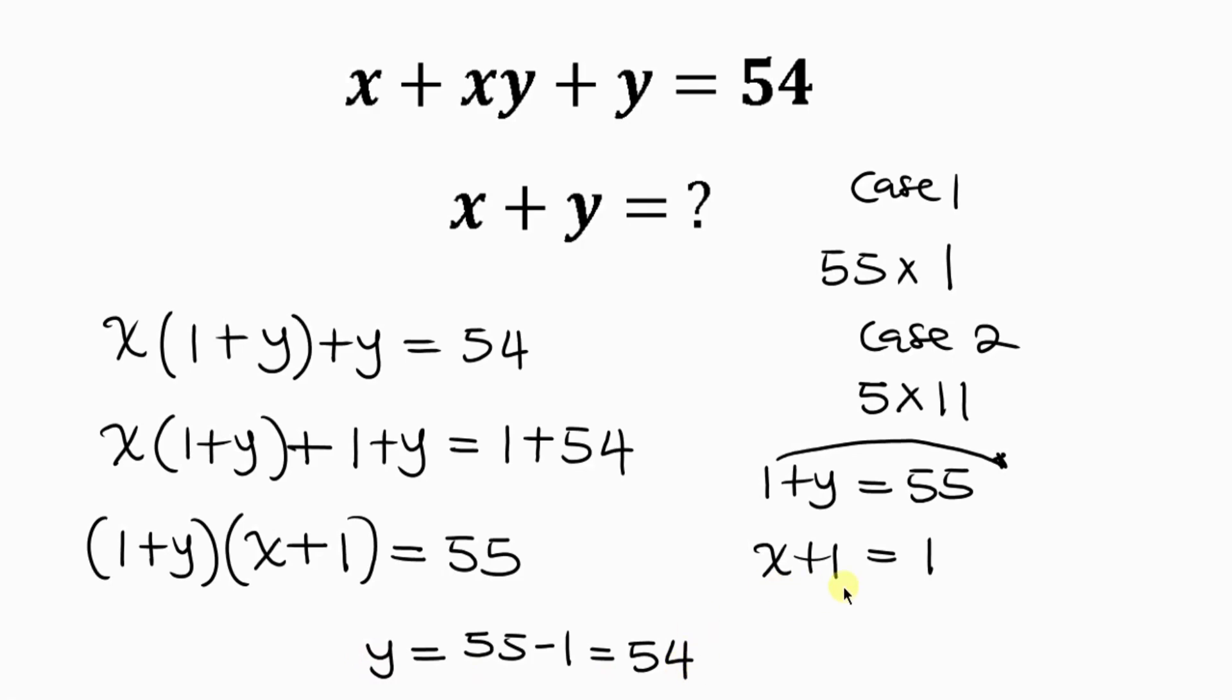Now here I still have to move 1 to the right hand side so that we have x to be equal to 1. And as 1 crosses to the right it becomes minus 1. So 1 minus 1 is 0, making the value of x to be 0.